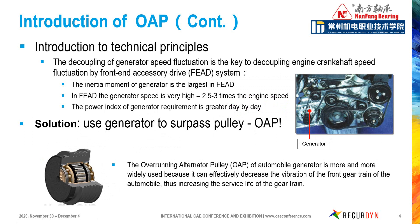In order to control the speed fluctuation of the generator, the most important function is to decouple the influence of crankshaft speed fluctuation on the generator shaft. In the FEAD system, the moment of inertia of the generator is the largest one, and the generator speed is 2.5 to 3 times the engine speed. OAP is designed to solve the problems caused by engine speed fluctuation, and nowadays OAP is widely used in automobile generators because of its effect in decreasing the vibration of the front drive chain. The service life of the drive chain is improved with the help of OAP.